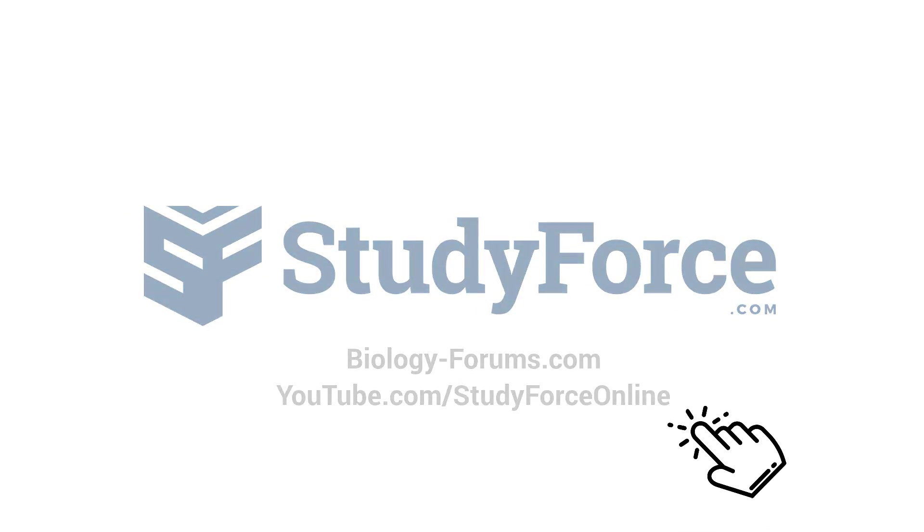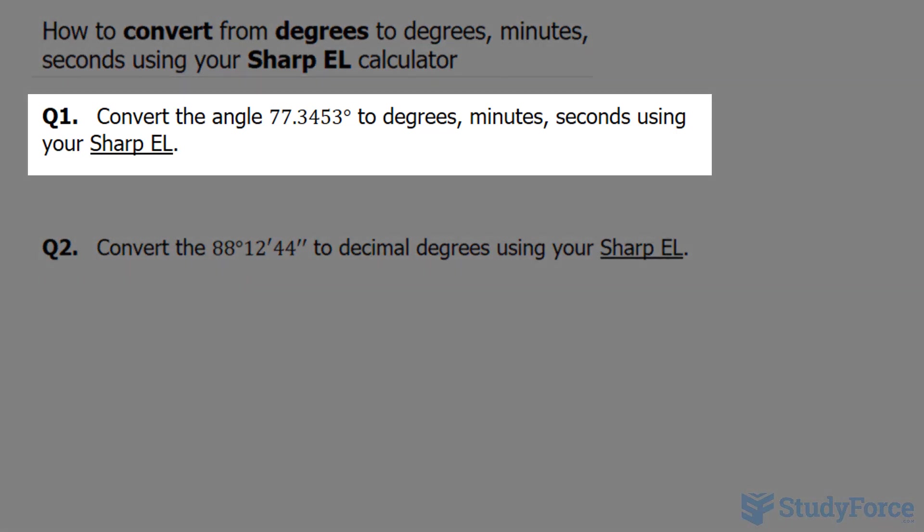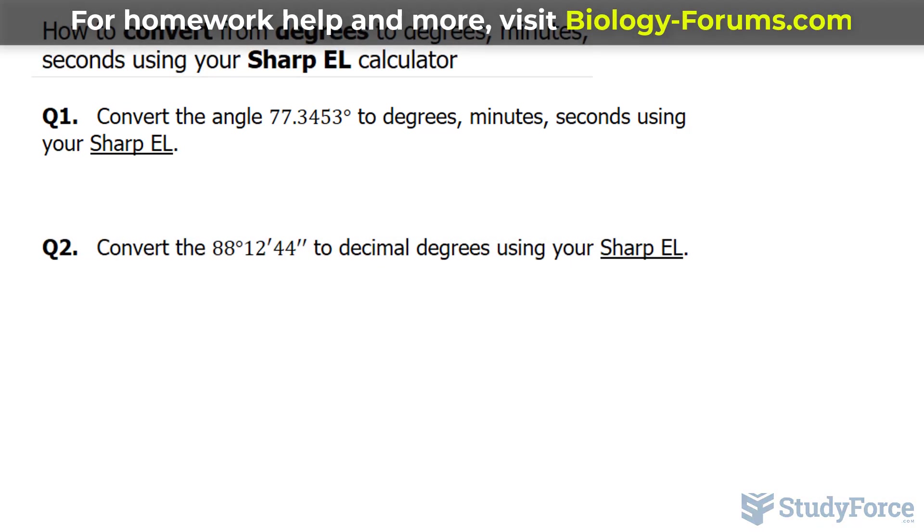In this lesson, I'll show you how to convert from degrees to degrees, minutes, seconds using your Sharp EL calculator. The first question reads: convert the angle 77.3453 degrees to degrees, minutes, seconds using your Sharp EL.